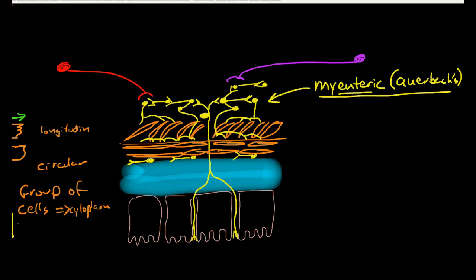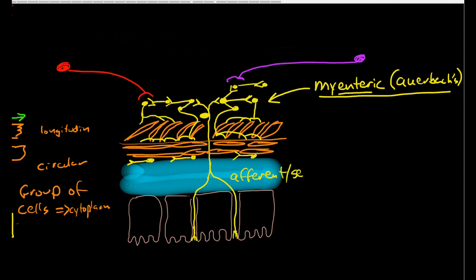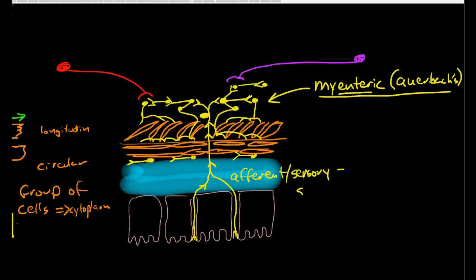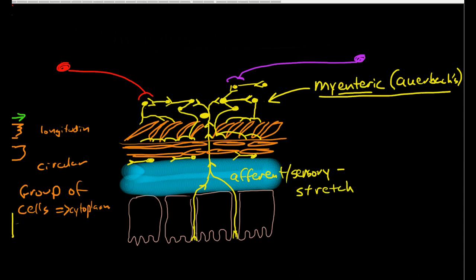The myenteric plexus has afferent sensory nerves, and these sensory nerves deliver information to interneurons within this plexus. What kind of sensations? It's very attuned to stretch and there are some chemoreceptors as well, so both chemical receptors and stretch receptors can stimulate this plexus.